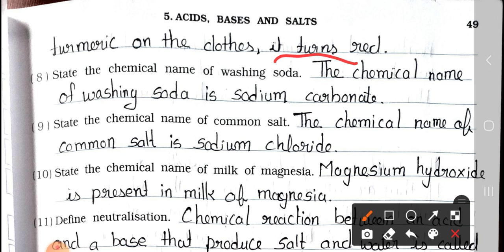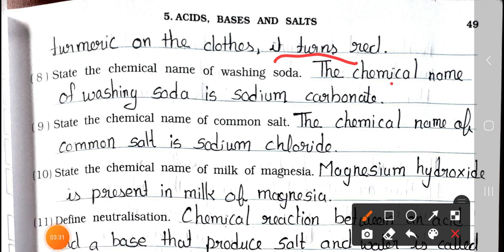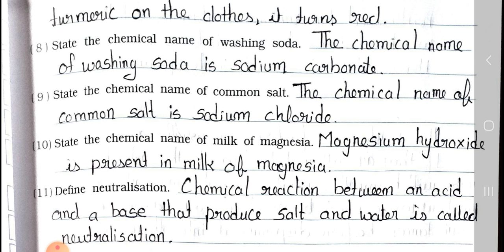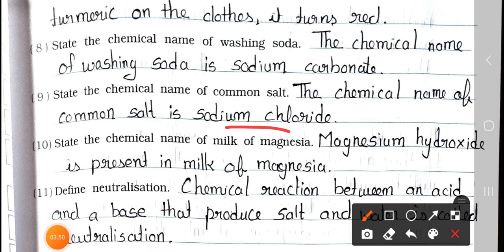Question number 8: State the chemical name of washing soda. Answer: The chemical name of washing soda is sodium carbonate. Question number 9: State the chemical name of common salt. Answer: The chemical name of common salt is sodium chloride. So don't be confused between the two.